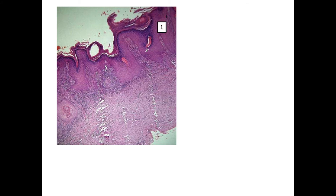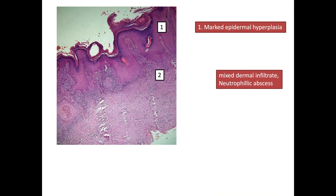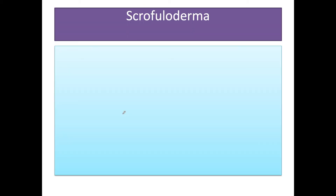On histopathology, as the name tuberculosis cutis varicosa implies, the epidermis shows marked hyperplasia, followed by marked dermal infiltrate with neutrophilic abscess, and the presence of caseating necrosis in the dermis.